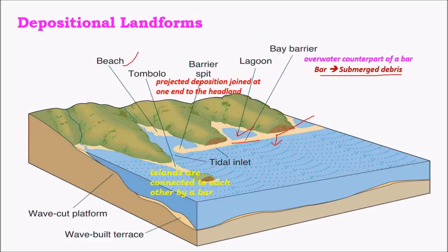A barrier spit is simply debris that has accumulated and is connected to one side of the beach, while the other side remains open for water to enter. This kind of structure is called a barrier spit.